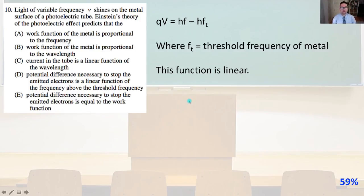Number 10. Light of variable frequency shines on the metal surface of a photoelectric tube. Einstein's theory of the photoelectric effect predicts that. So we have QV equals HF minus HF subscript T where F subscript T, that's the threshold frequency of the metal. And so as you can see, this is a linear equation. And so that is answer D. Where V is our potential difference and Q is our charge.